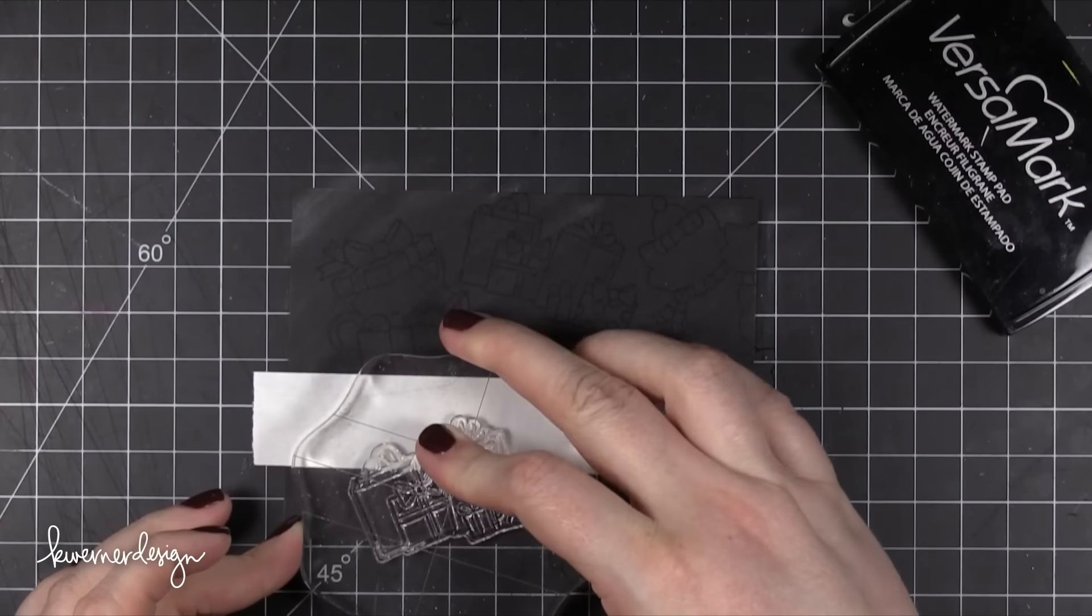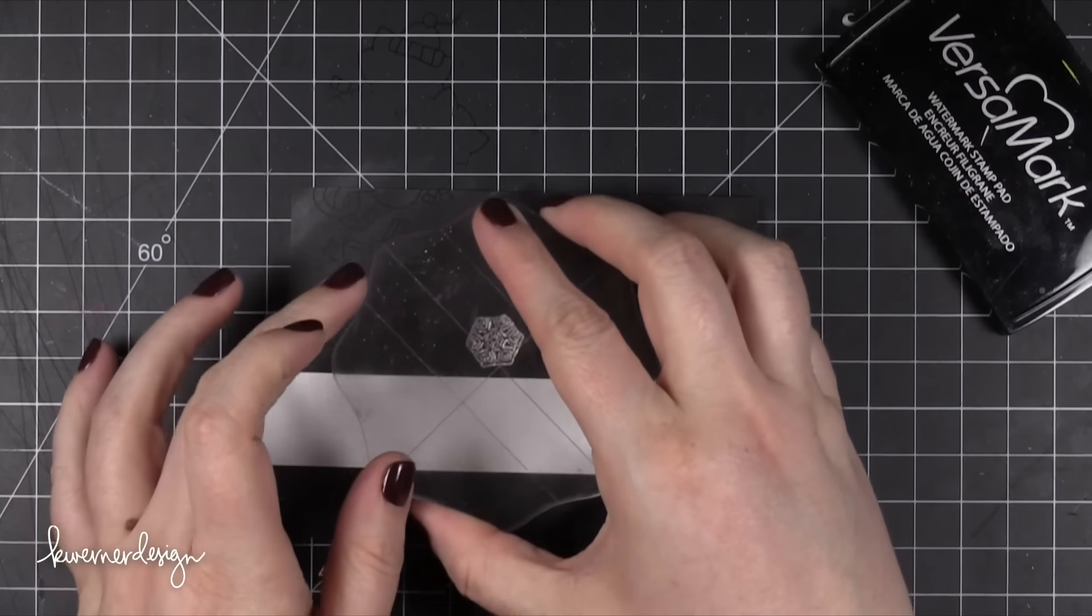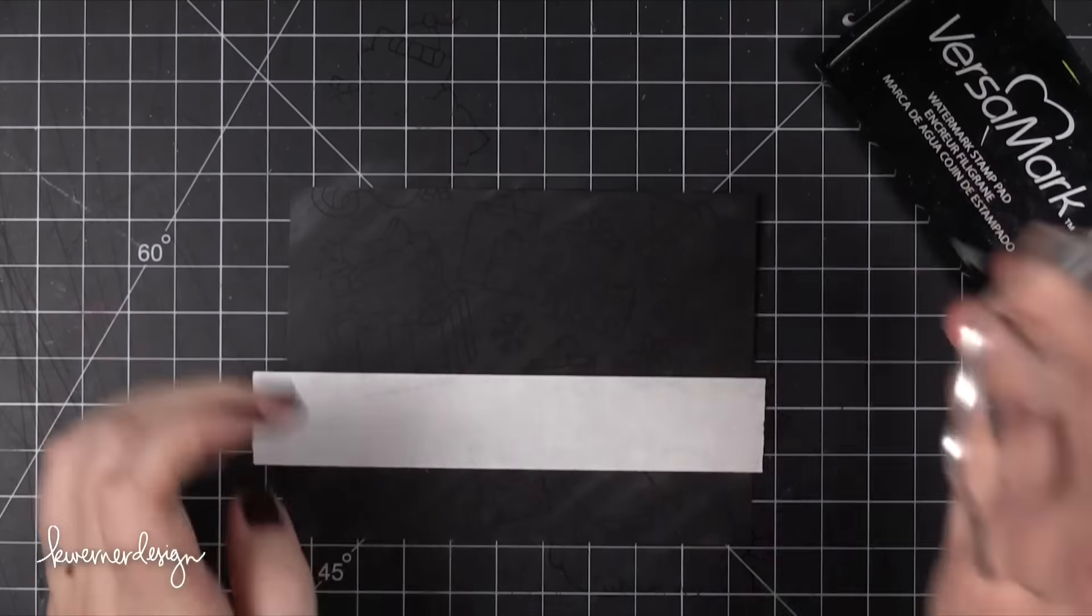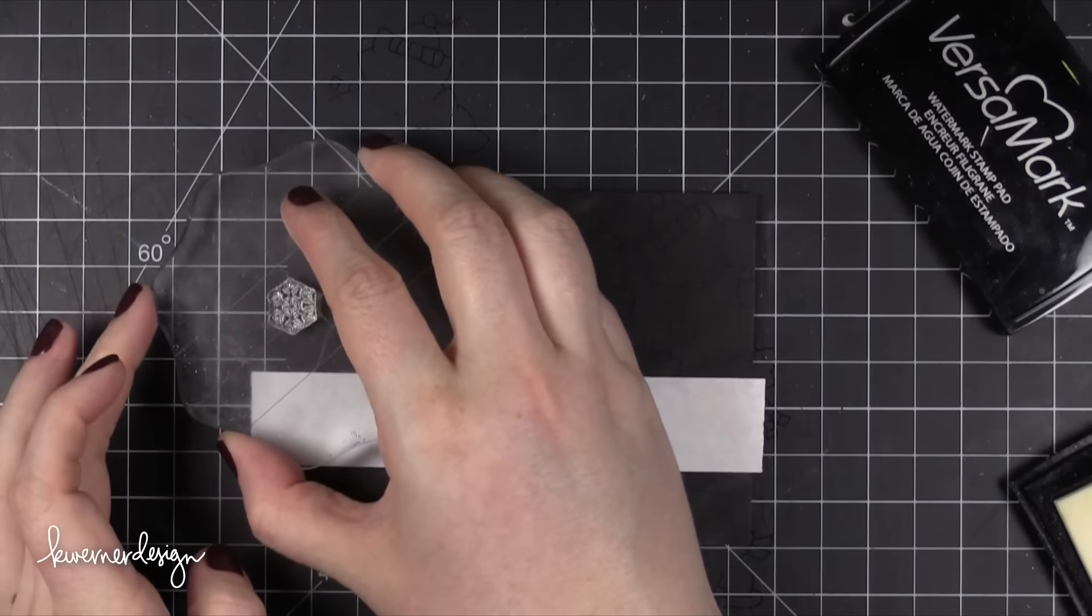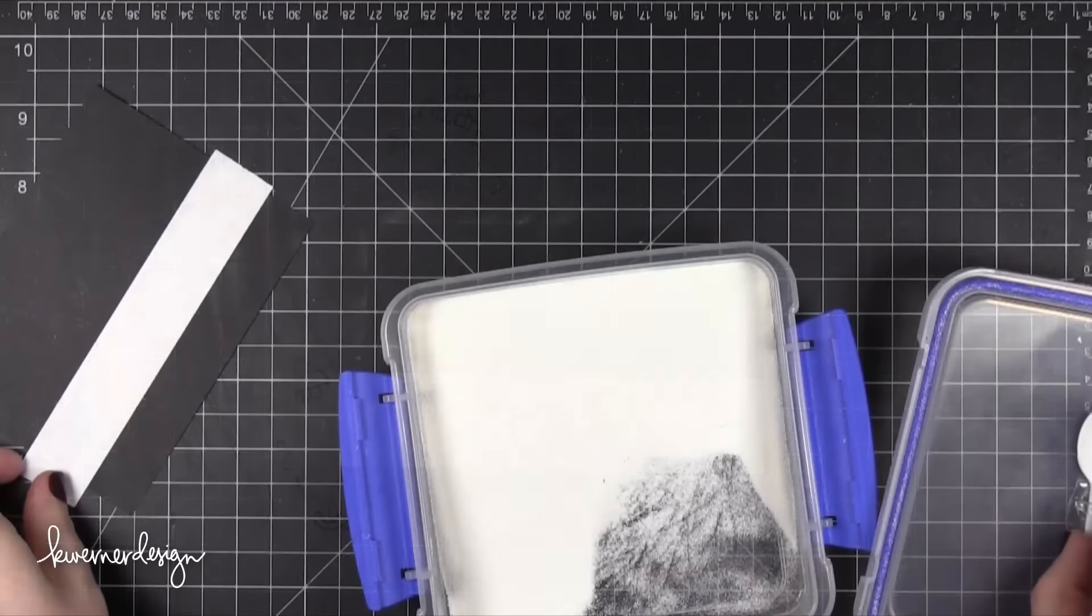For areas where there was a big gap or kind of like a little triangle shape or anything that was just large enough, I took the snowflake stamp from the stamp set and filled those in with the snowflake. I just wanted it to look a little bit more festive with those snowflakes.